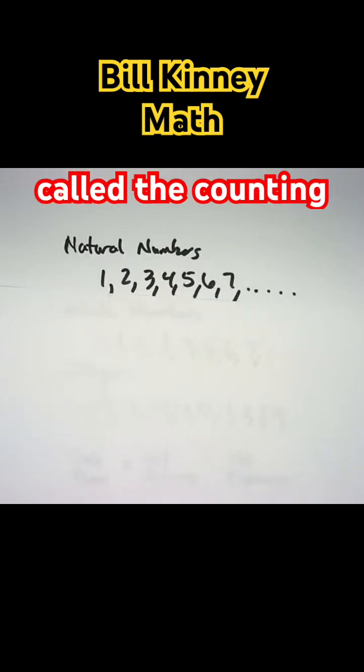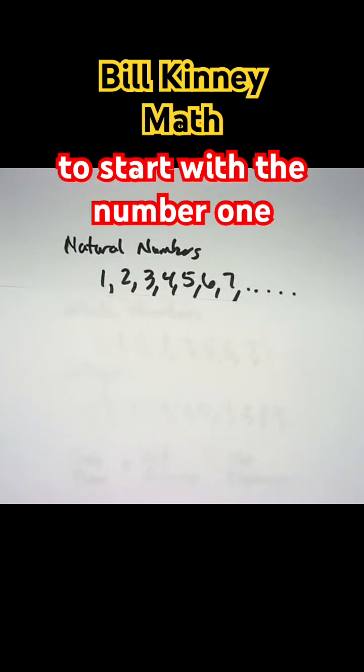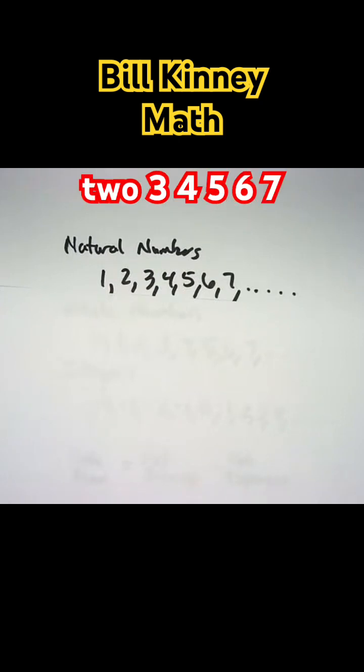The natural numbers are also called the counting numbers and are considered to start with the number 1: 1, 2, 3, 4, 5, 6, 7, etc.